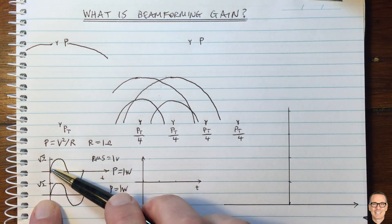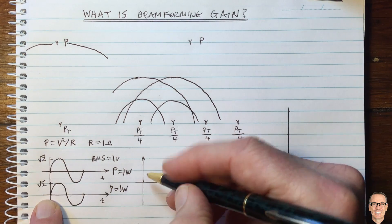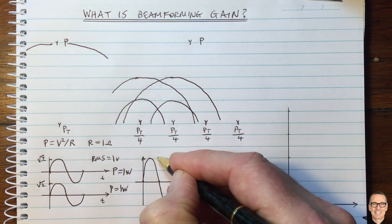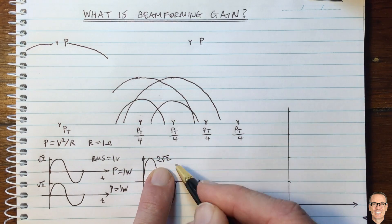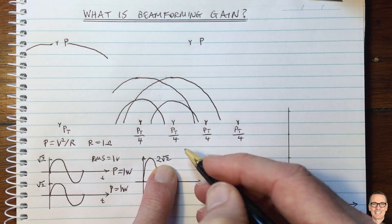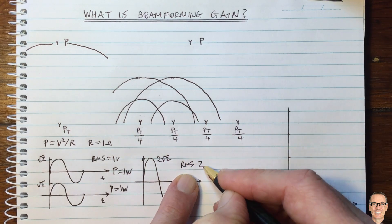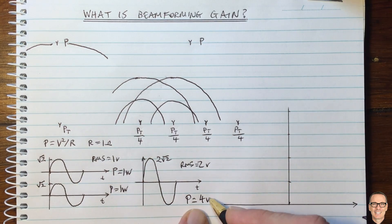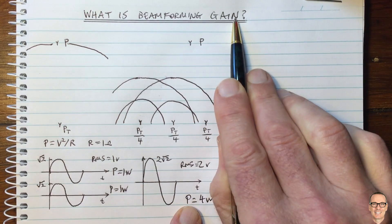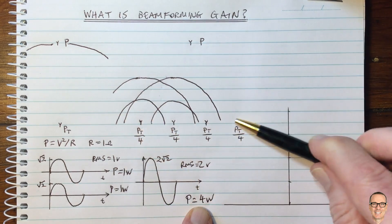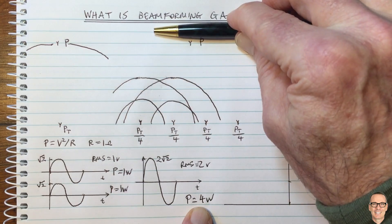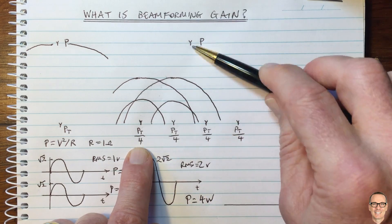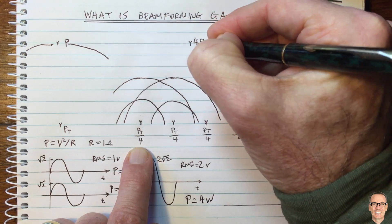But let's actually add these two waveforms. Adding in phase: square root of two plus square root of two — we're going to get a sinusoidal waveform which has got an amplitude of two times the square root of two. Of course, this corresponds to an RMS value of two volts, which means the power corresponds to four watts. And here is the gain. This is exactly what's happening in the beamforming case when you are side on to the array. In this case, we've got four elements here — instead of simply getting P, we're now going to get four times P.